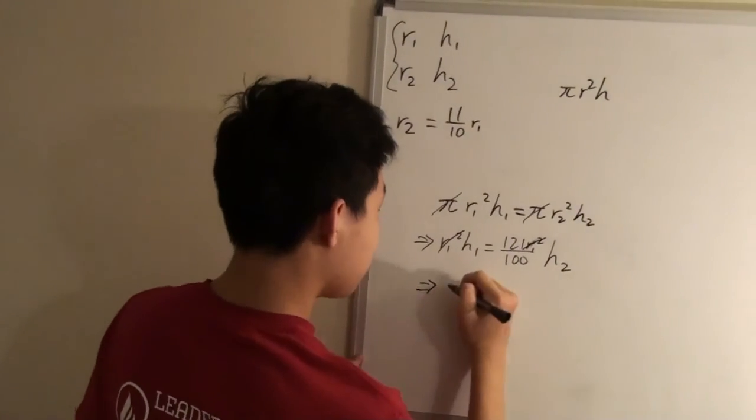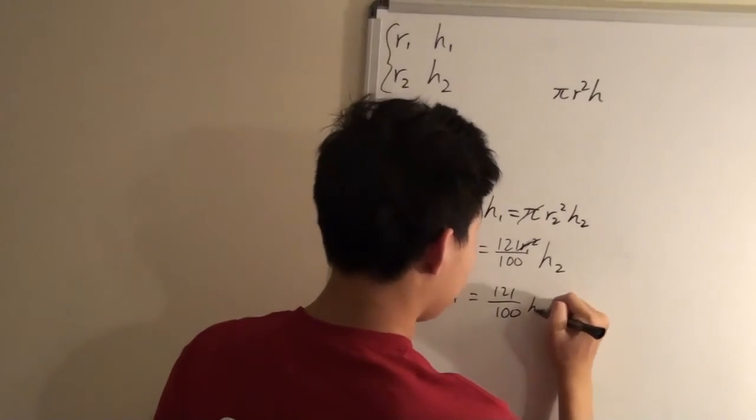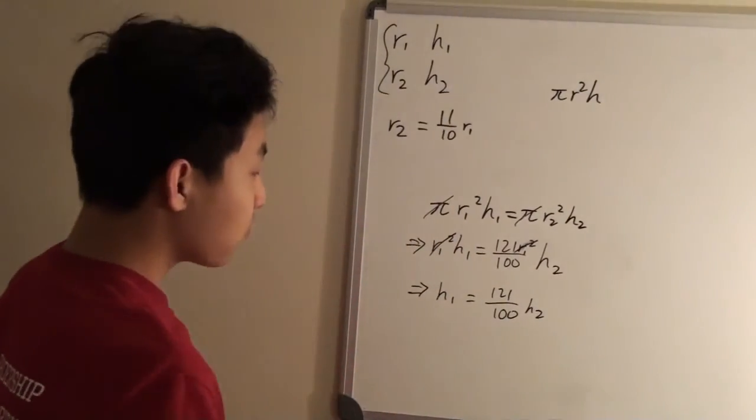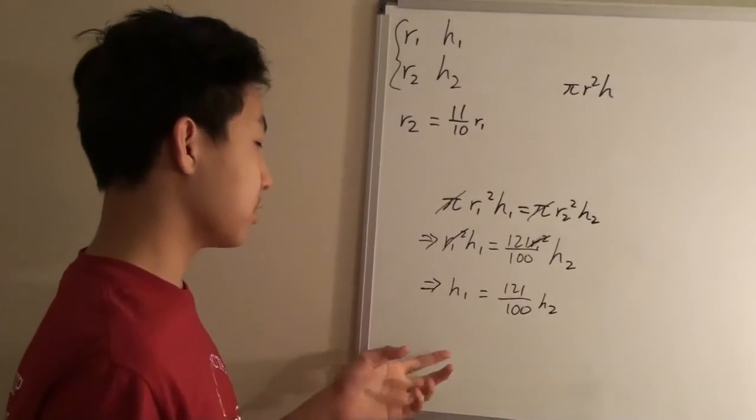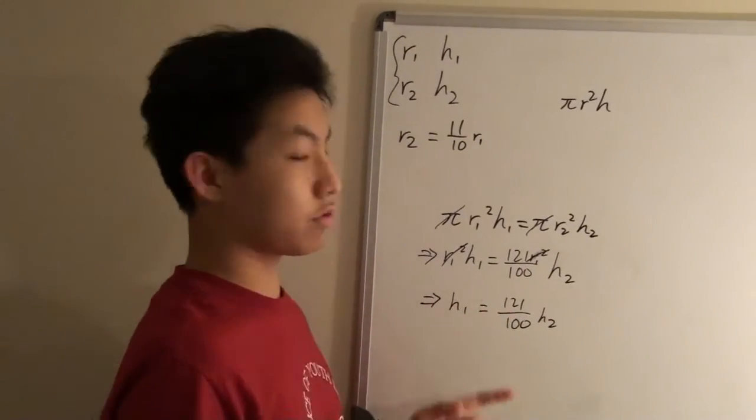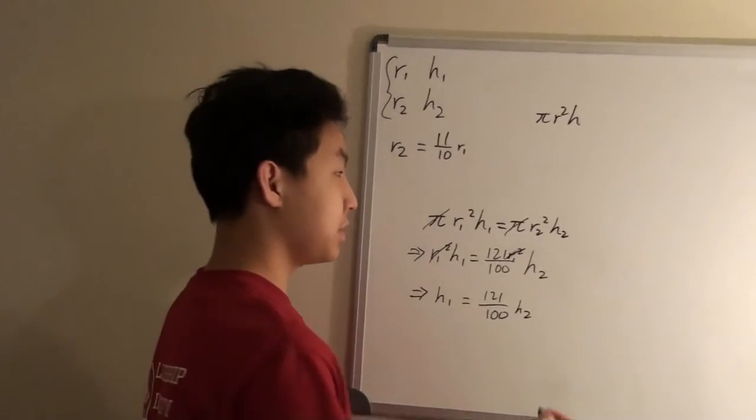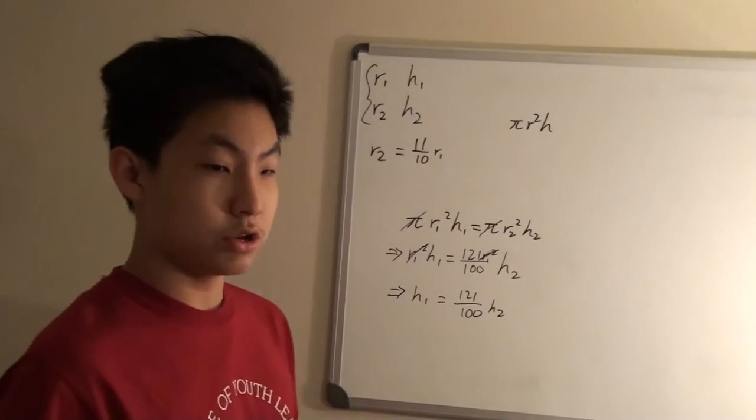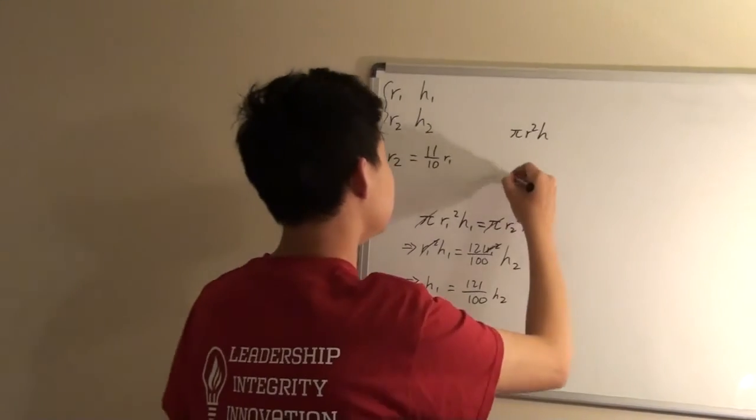This gives us h₁ = 121/100 × h₂, which means that the height of the first cylinder is 21% greater than the height of the second cylinder. That's our final answer, which is option D.